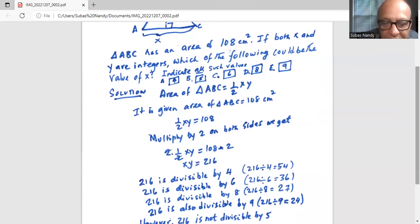And if x is 8, then y is 27, because 216 divided by 8 is 27. And if x is 9, then y is 216 divided by 9 equal to 24.